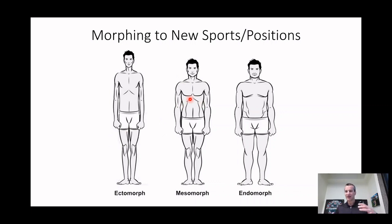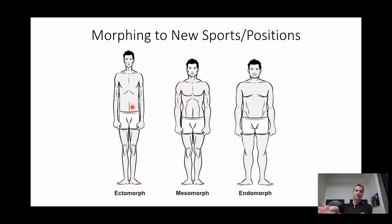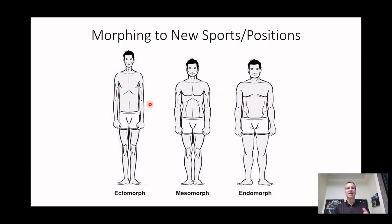A mesomorph has an average or moderate-sized body mass and moderate arm length. An ectomorph has longer limbs. A mesomorph is going to have a little bit more muscle mass, an ectomorph a little bit lower muscle mass. The idea is that these body types are actually going to help you in a specific sport or a specific position within a sport.